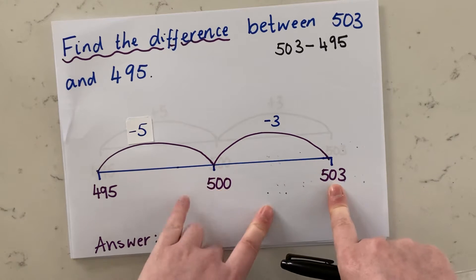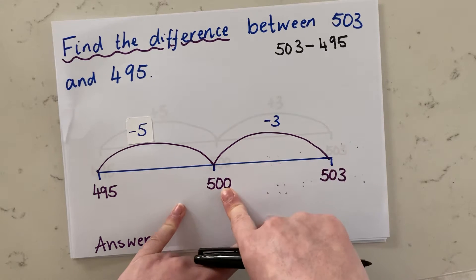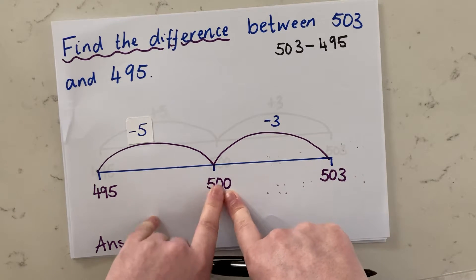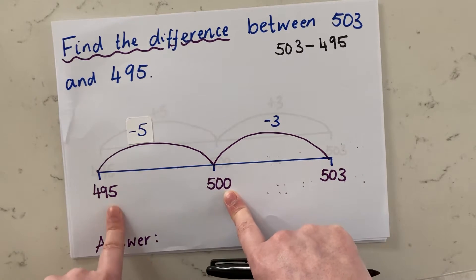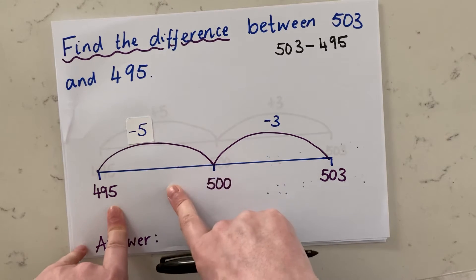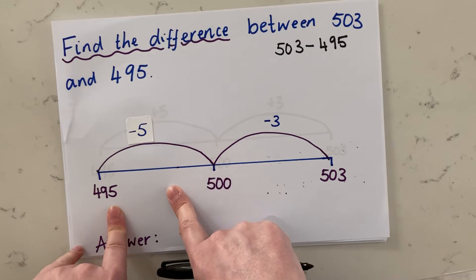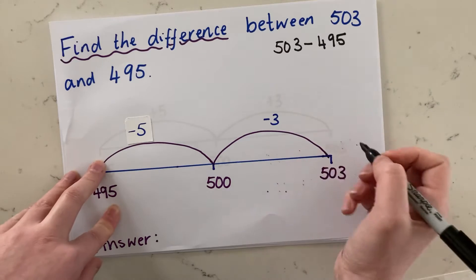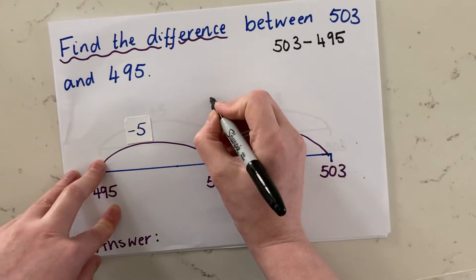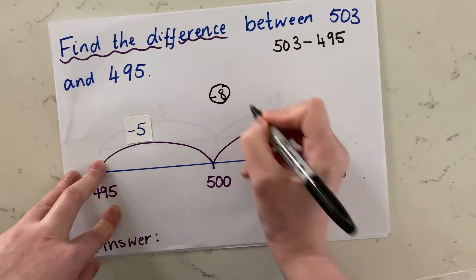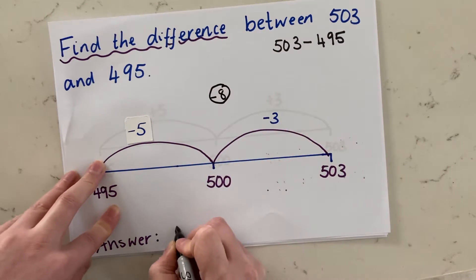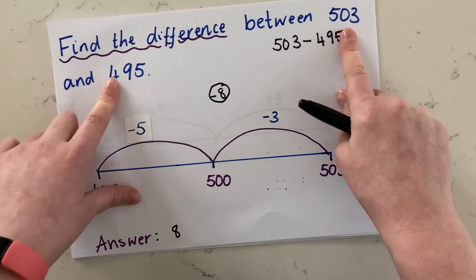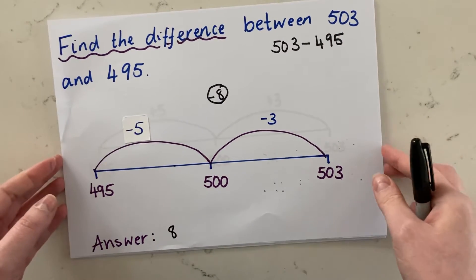So 503 counting back to 500 — nice and easy — we need to take off three. Then 500 back to 495, we need to take away five. So altogether we have taken away eight. So our answer is eight. The difference between 503 and 495 is eight.